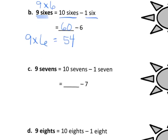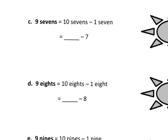So 9 sevens. So that's really 9 times 7. And so we could think of that as 10 sevens minus 1 seven because we only want 9 sevens. So 10 sevens is 70 minus 7. 70 minus 7 is 63. So 9 times 7 is 63.